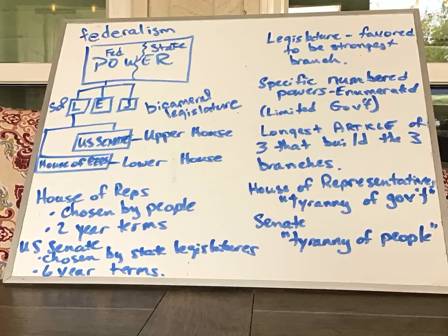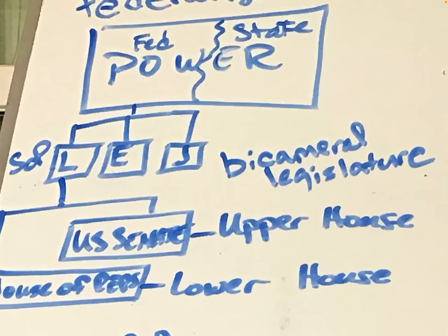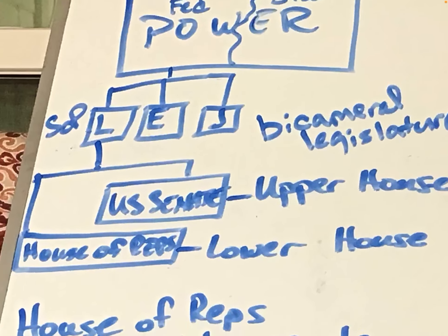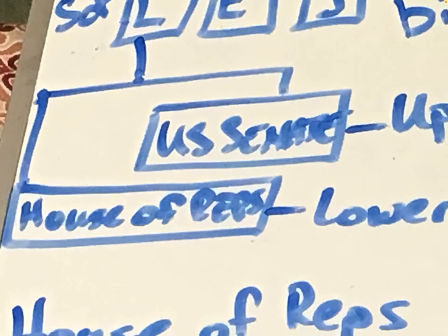In particular, once we take that federal piece of power and federalism and divide it into separation of powers, we have a legislative branch, an executive branch, and a judicial branch. The SOP — that is, the separation of powers — gives us three different branches of government. We're focusing mainly on the legislative branch today.